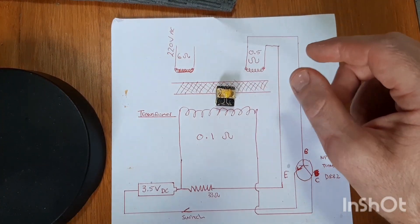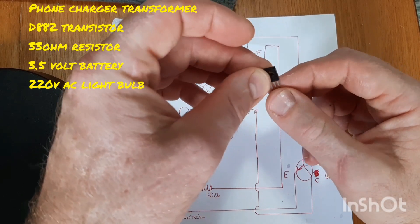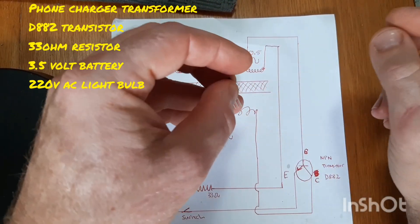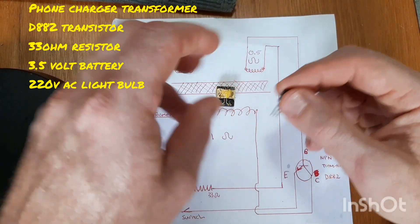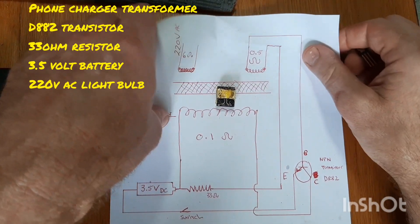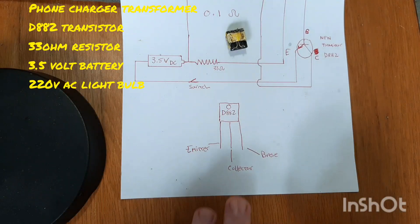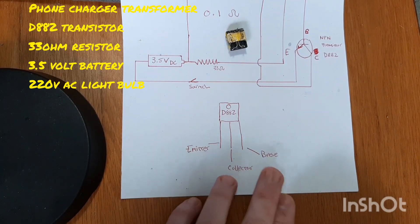Then we need a transistor. There's a D882 transistor. Now just be very careful with this. In a picture, the transistor will look like this: Emitter, collector and base.